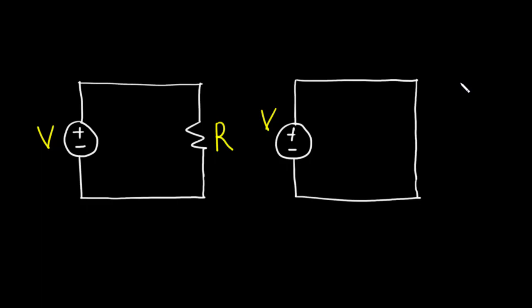Let's start this lecture by considering these two circuits. The circuit on the left has a voltage source connected across a resistor, while the circuit on the right has a voltage source connected directly to itself. Now, which of these two circuits is a short circuit — the one on the left or the one on the right?